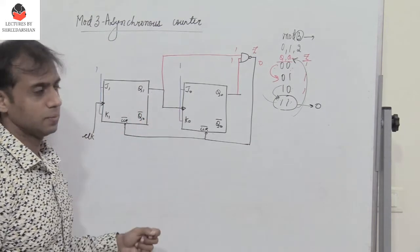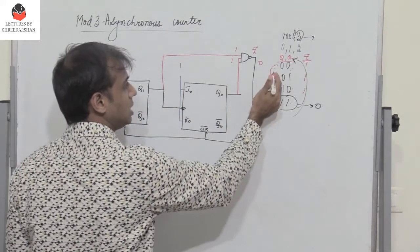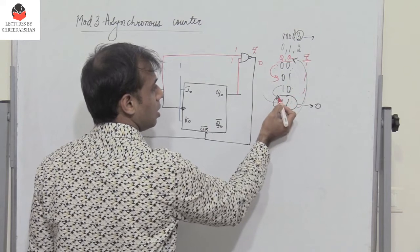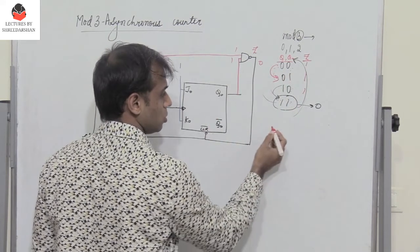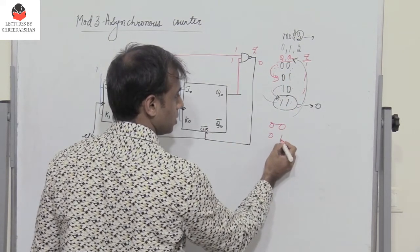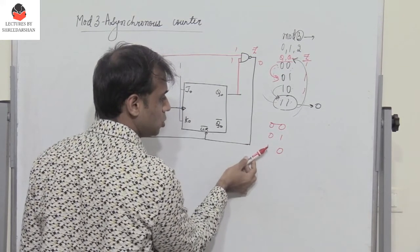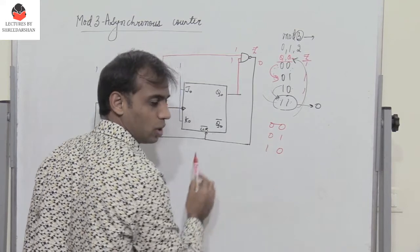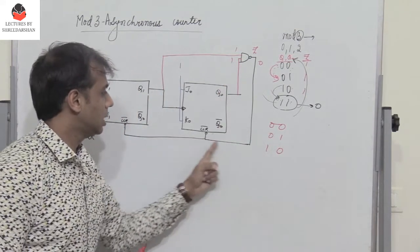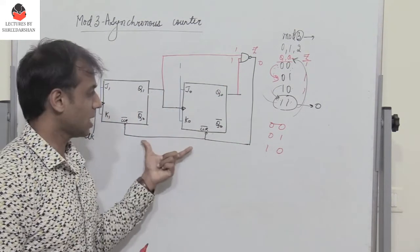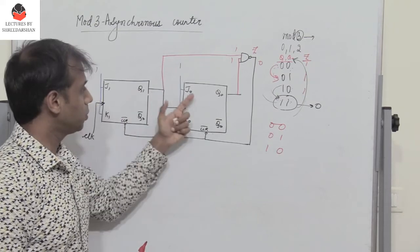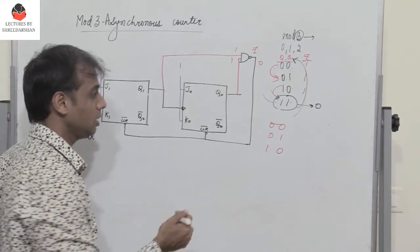Therefore, the output will immediately change from 11 to 00. So you have 00, 01, 10, and when the flip-flop tries to change from 10 to 11, the clear for both flip-flops is activated, so the outputs are cleared, meaning the output becomes 0.